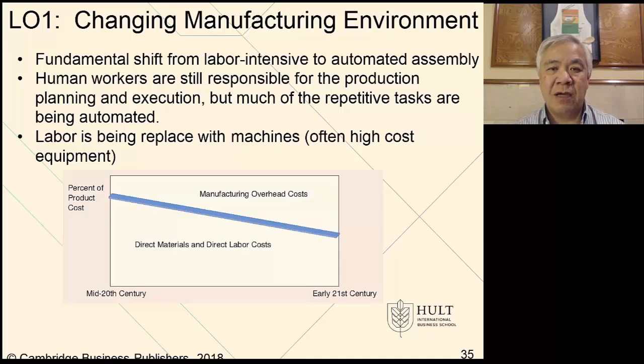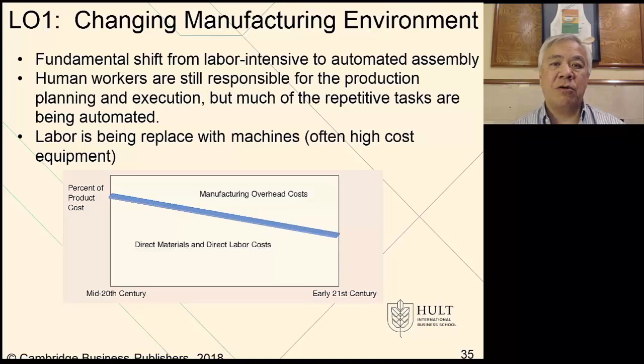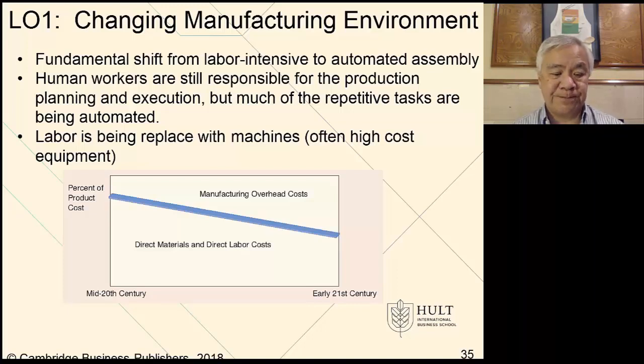So that's what we're doing — we're looking at ways to do better allocation of costs, rather than what we did in the last chapter in job order costing using the predetermined overhead rate, the POHR.